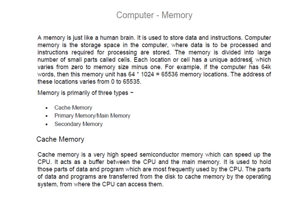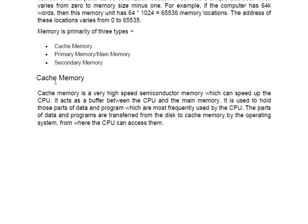There are mainly three types of memory: cache memory, primary or main memory, and secondary or auxiliary memory. Let's discuss cache memory first. Cache memory — pronounced 'cache' — is a very high-speed semiconductor memory. It is installed built-in on the computer, meaning it comes with the motherboard as part of the CPU. It is used to speed up the CPU, that is, the microprocessor. It acts as a buffer between the CPU and the main memory.